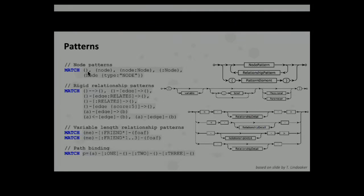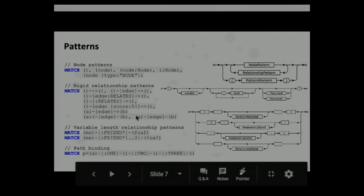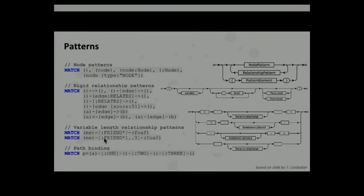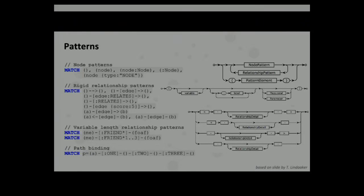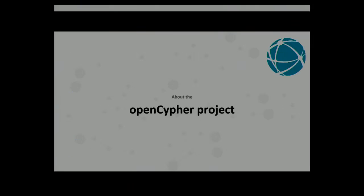Patterns are the central concept. We have node patterns — you can specify the labels or what properties you expect. You have rigid relationship patterns, meaning you're talking about a single relationship, not many. You can say it must be outgoing, must have this relationship type, must have these properties, or maybe you don't care about the direction. And then there are also variable-length relationship patterns — that's when you're looking for sequences of arbitrary lengths. Cypher also supports paths as first-class values, so you can find longer chains and treat them as values you return to your application.